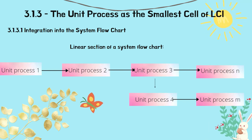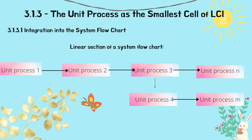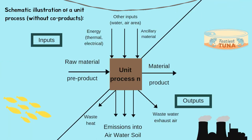As we can see here, this is the linear section of a system flow chart — we can see that it is in a linear form. The next diagram is a schematic illustration of a unit process without the co-product. It shows how the raw material or pre-product is the input, and it produces the product or material as the output, undergoing the unit process.